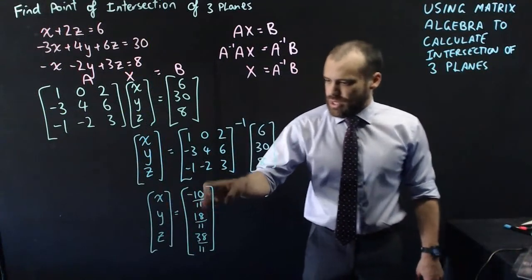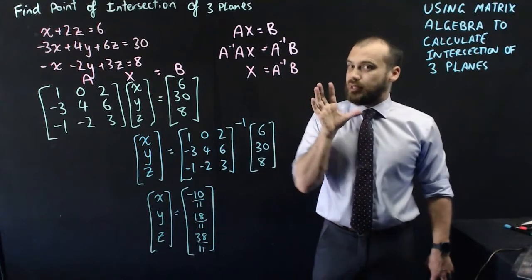x equals negative 10 over 11, y equals 18 over 11, and z equals 38 over 11.